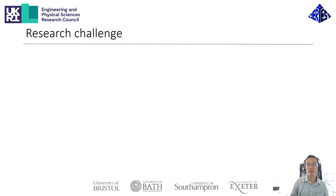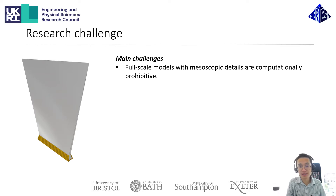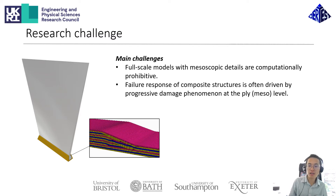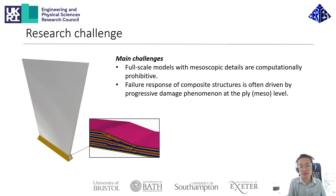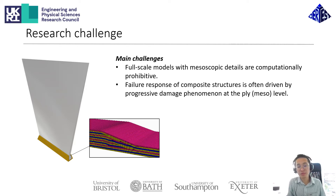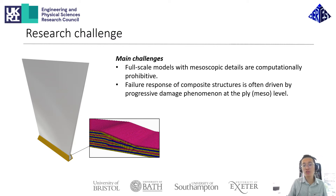First of all, I'd like to give an overview of the research challenge that we're trying to address. The progressive failure analysis of composite structures is notoriously expensive computationally, and the reason for this is that the structural failure behavior of composites is very often driven by damage behavior of defects and features that happen at the meso or micro length scales, which is very often very small compared to the size of our structure. In order to make any kind of meaningful numerical predictions, all of these fine-scale details must be included in the model, and we often end up with a very large model that takes a very long time to solve.